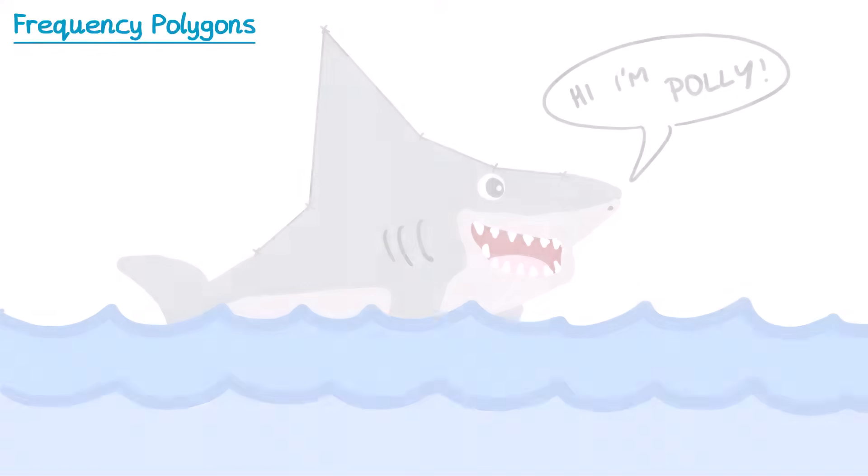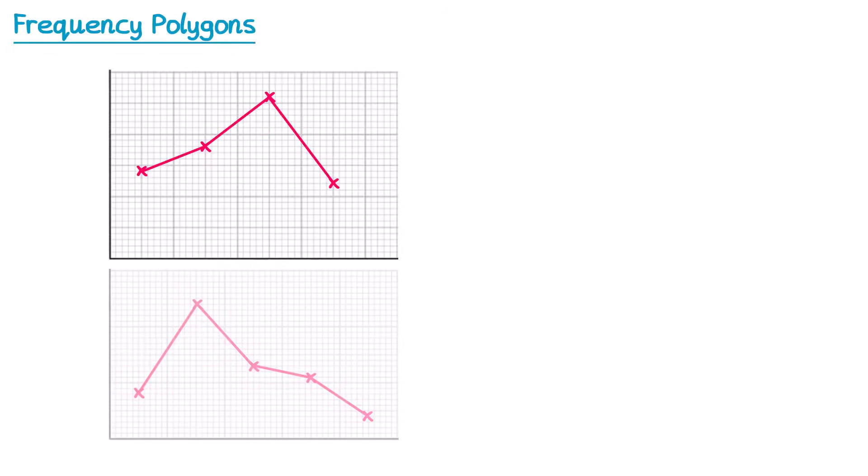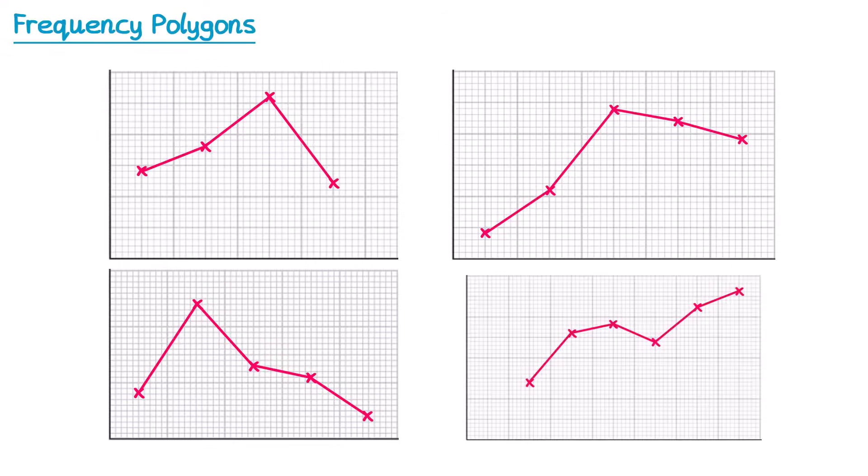And to be fair, if we look at some of the past exam questions, most of them do look like this shape. At the time of recording this video, Edexcel have asked students to draw a frequency polygon four times. The resulting shapes look like this. So with the exception of the final diagram here, the other ones do look like the shark fin shape.